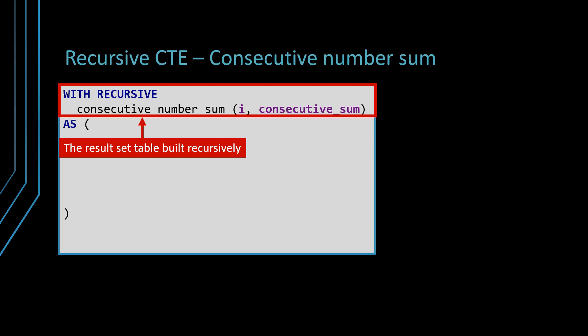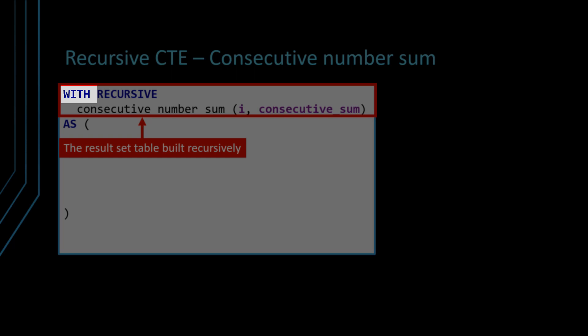So your recursive query starts with with, it's just like a regular common table expression and the database figures out whether this one iterates or not over the result set based on its definition.